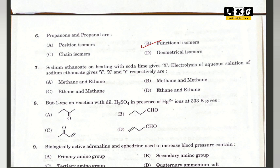Question number 7: sodium ethanoate on heating with soda lime gives X; electrolysis of aqueous solution of sodium ethanoate gives Y. X and Y respectively are option A — methane and ethane. Question number 8: bute-1-yne on reaction with dilute H2SO4 in presence of Hg2+ ions at 333 Kelvin gives option A — you will get a ketone.